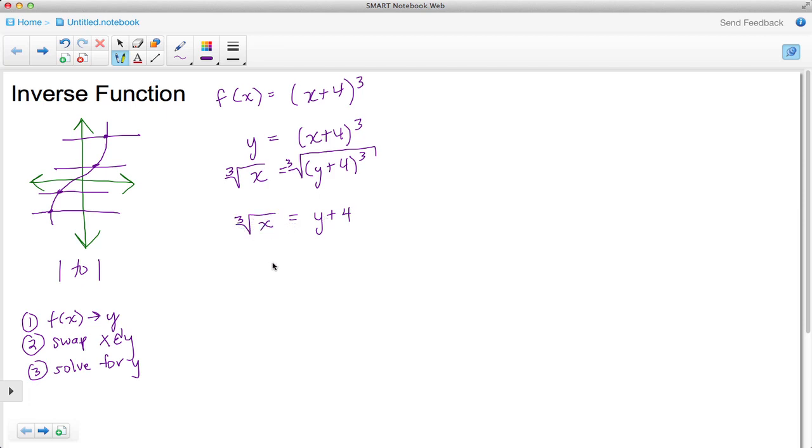Taking the cube root of this quantity which is taken to the third power leaves me with just the y plus 4. On the left-hand side I'm left with the cube root of x. Now to solve for y, I subtract 4 from both sides. These fours cancel, leaving me with the cube root of x minus 4 is equal to y. Now to put this in inverse notation, I've got the cube root of x minus 4. So that there is the inverse of this original function that we started with.